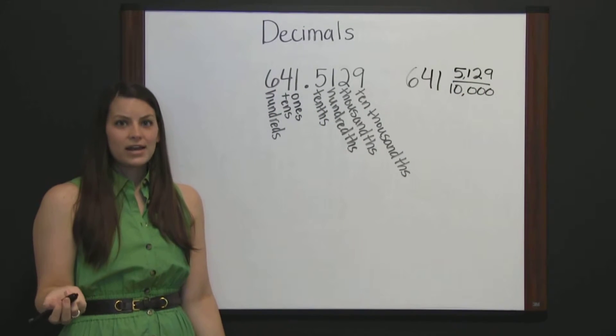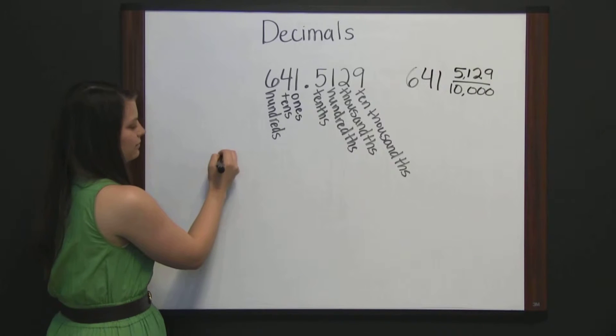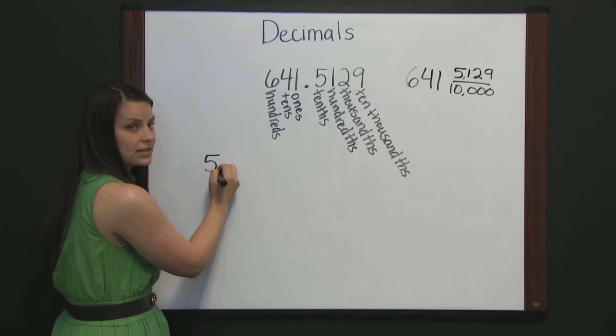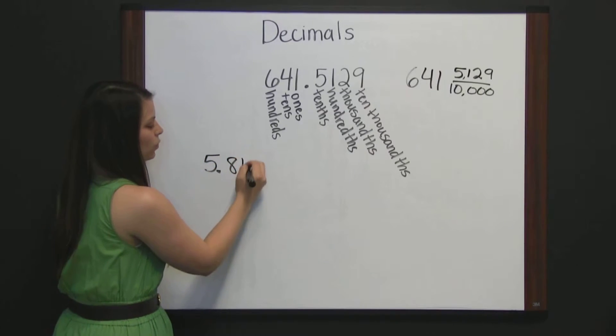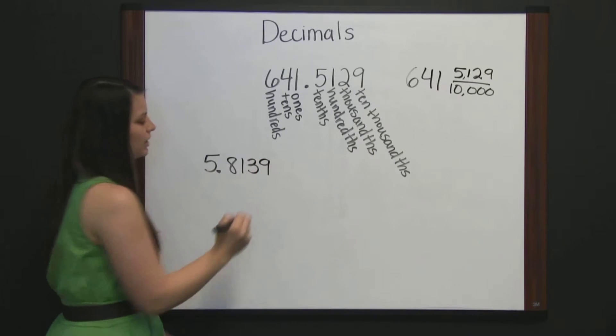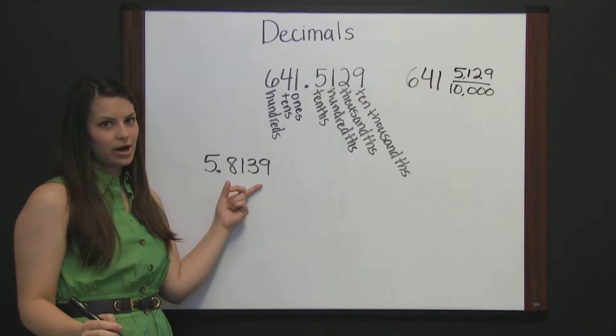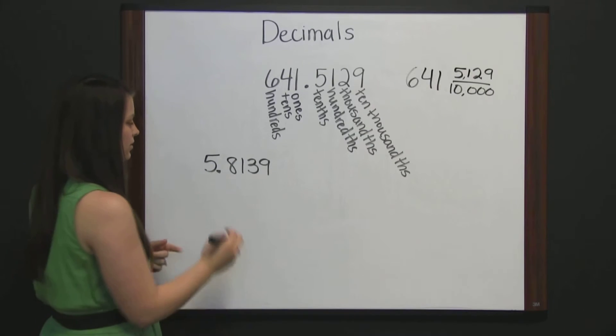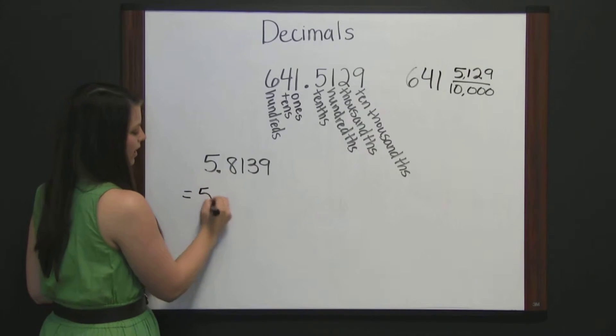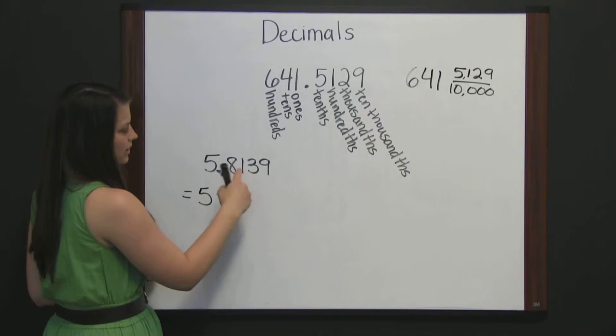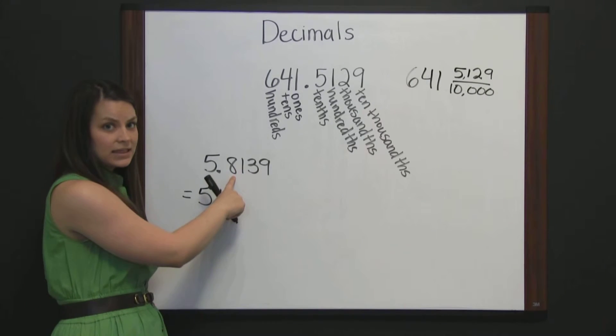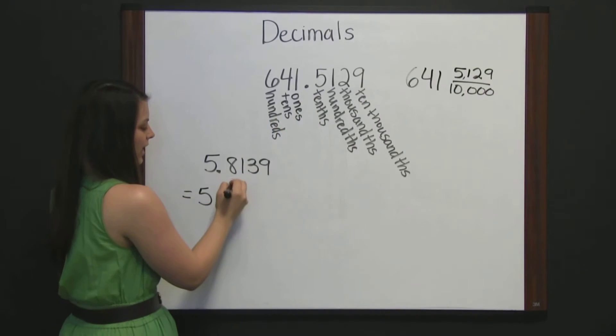Let's look at another decimal. Five and 8139 ten thousandths. We could write this number as an improper fraction by taking the five plus, this would be eight tenths, since it's in the tenths place,